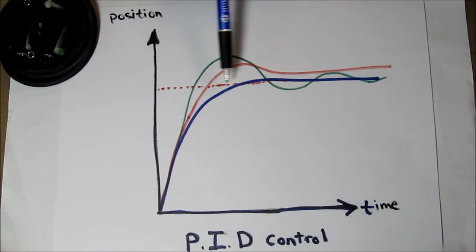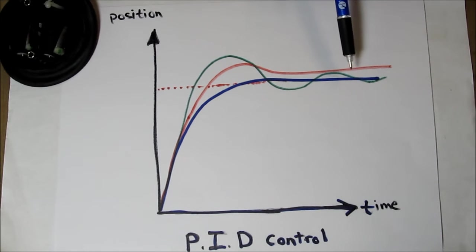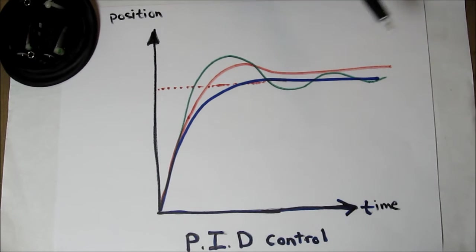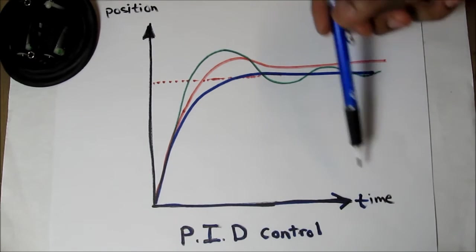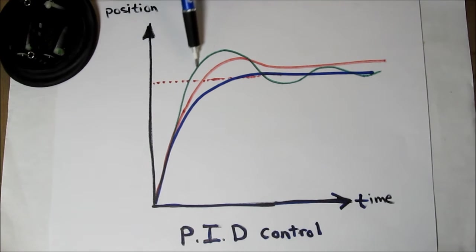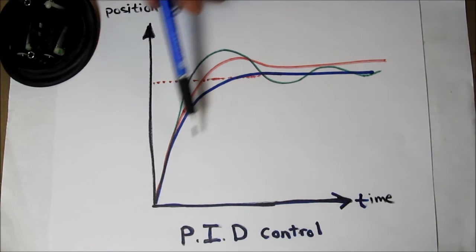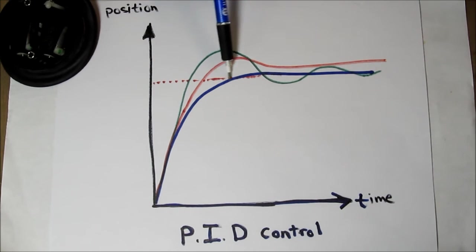One way the final position of the memory mirror can be controlled is by using a proportional integral derivative controller, or a PID controller. On the position time graph, a PID controller can be used to prevent overshoot and oscillation as dictated by the green line, and also steady state error as dictated by the red line, to give you a nice smooth and quick response as dictated by the blue line here. And that's how memory mirrors work.